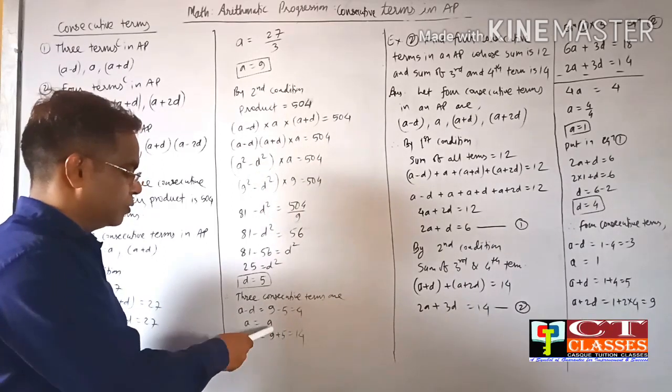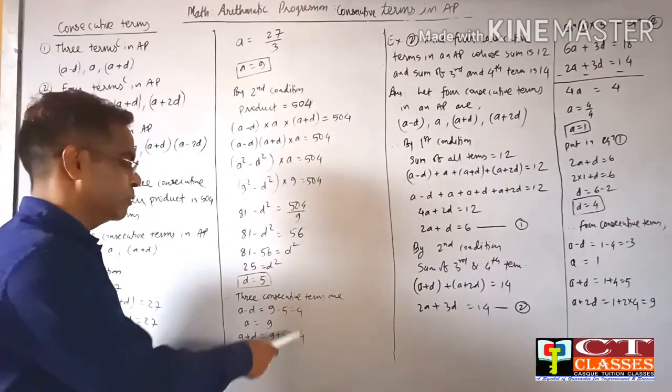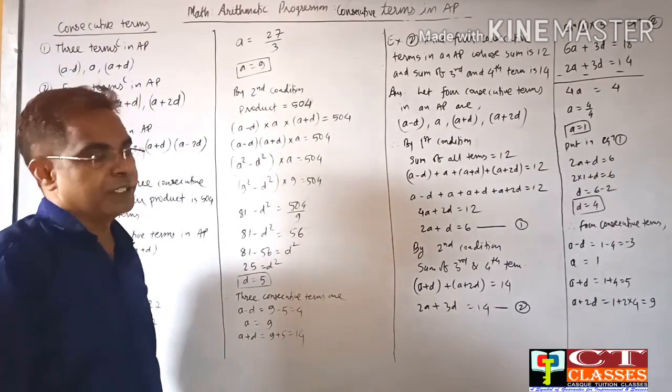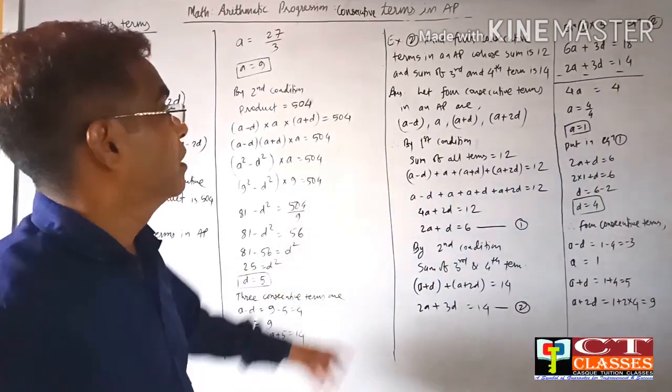The terms are: a-d = 9-5 = 4, a = 9, and a+d = 9+5 = 14. So the numbers are 4, 9, 14. Next problem: 4 consecutive terms.